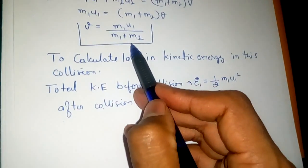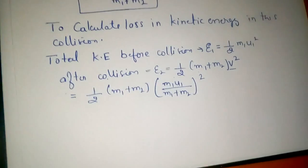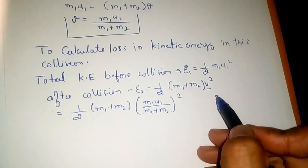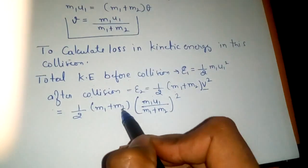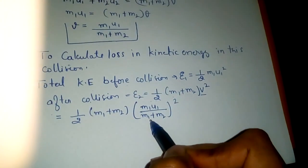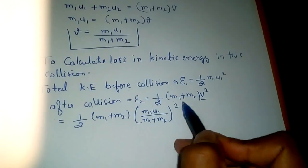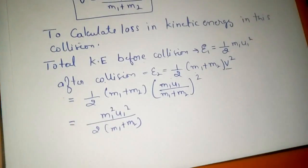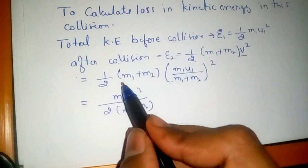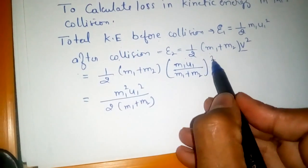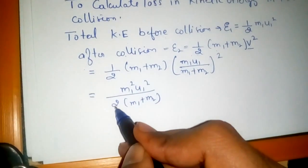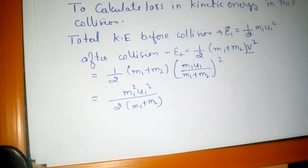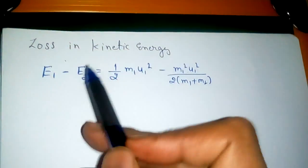We already know the value of v. Using this equation, putting the value of v here: half m1 plus m2 and m1 u1 upon m1 plus m2, the whole square, which further reduces to m1 u1 square upon 2 into m1 plus m2.